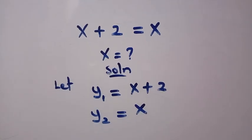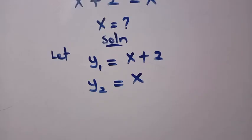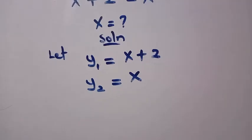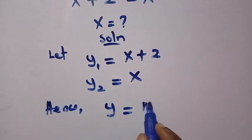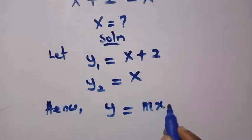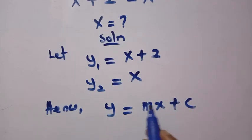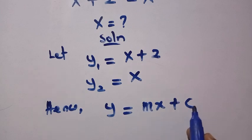So these two equations, they are equation of a straight line. Hence, when we consider the equation of a straight line, we have y equals mx plus c. As we have our m here, which is the gradient, and we have c here, which is the intercept.